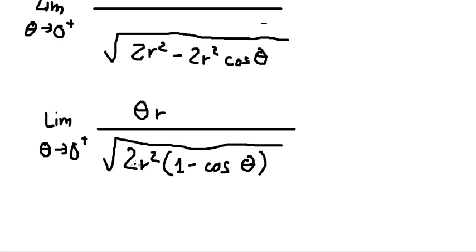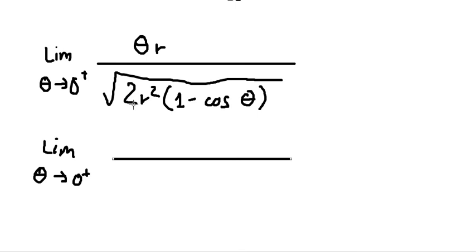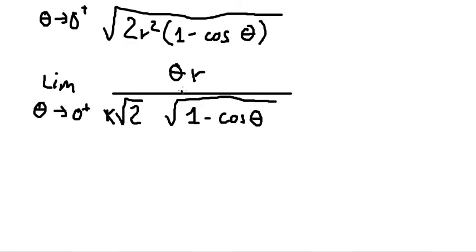We put the factored term outside the square root, so r comes out, and we simplify accordingly.